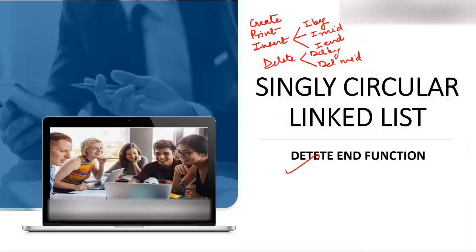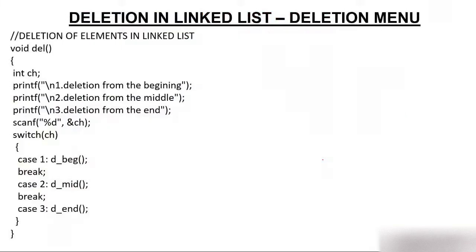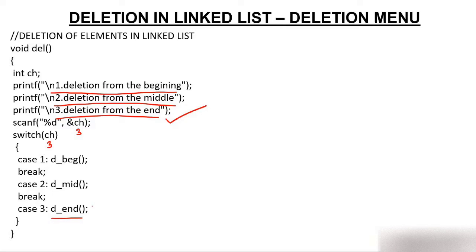You have to delete the node which is the last node. You will have a delete menu where pressing 1 deletes beginning, pressing 2 deletes mid, and pressing 3 deletes end. My job is to delete the node at end, so I will press 3. Switch will have 3, I will jump to case 3, and in case 3 I am calling dend — that is the delete end function.